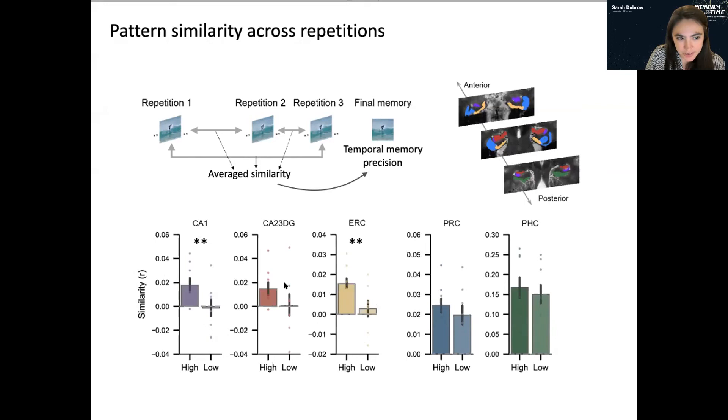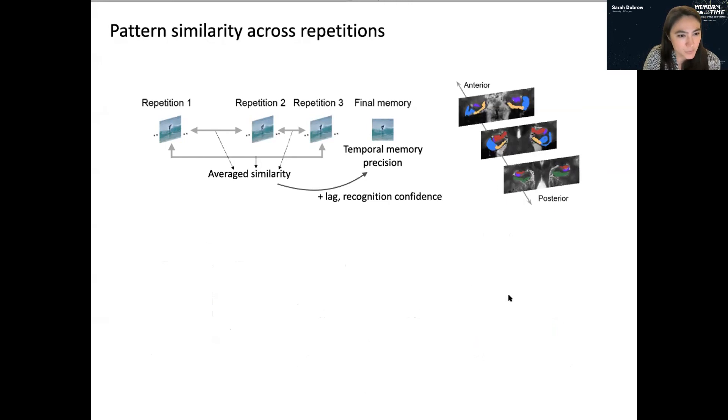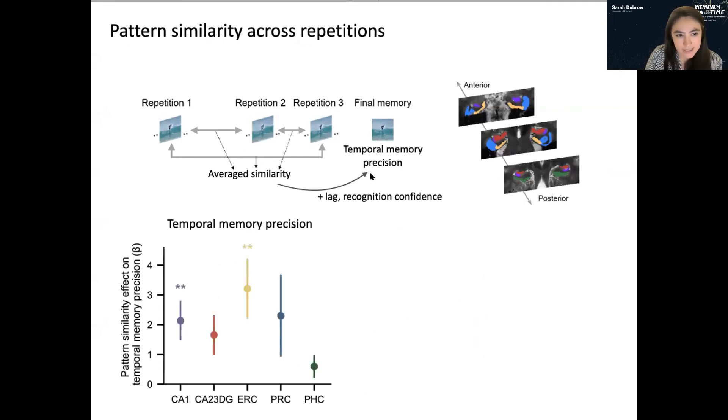The CA2 3 DG showed a trending effect, but it didn't survive multiple comparisons correction. So we were excited about this because these are basically the regions a priori that we would have expected to be sensitive to time, at least at the fine grain level. So we also wanted to control for lag, which can have a big effect on similarity and recognition confidence. And we still see in a mixed effects multiple regression model that CA1 and entorhinal similarity predicts temporal memory precision.